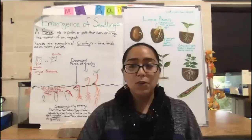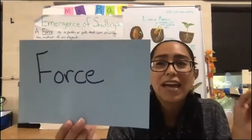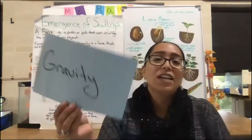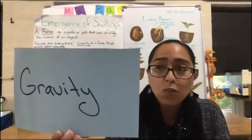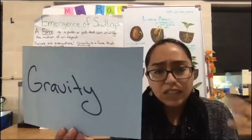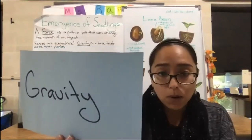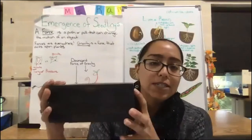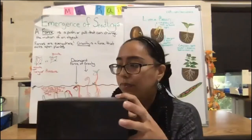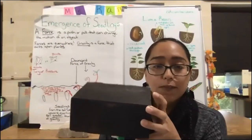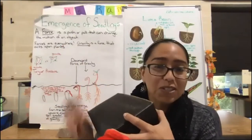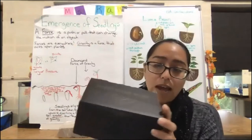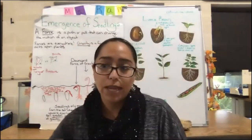Now we're going to focus on forces. A force is just a push or a pull that can change the motion of an object, and forces are everywhere. The most common force that affects our plants would be gravity — the downward force that draws objects toward the center of the earth. Seedlings can only emerge from the soil when they move upward, exerting a force on the soil greater than the downward force of gravity. The plant has to exert enough force greater than gravity to push its way through the soil.